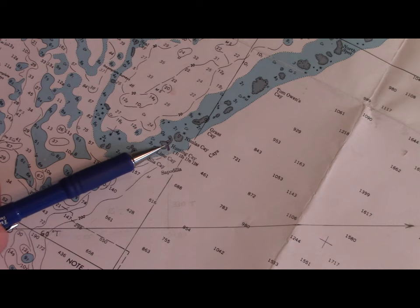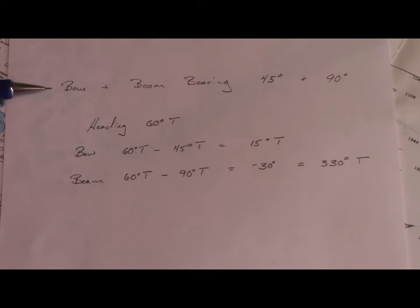A bow and beam bearing requires a 45 degree and a 90 degree bearing of the object in reference. My heading is 60 degrees, so for my 45 degree bow bearing I need to figure out what that is relative to my heading.